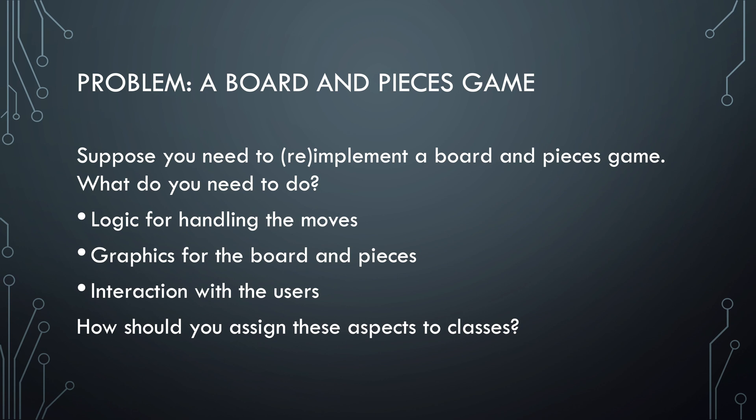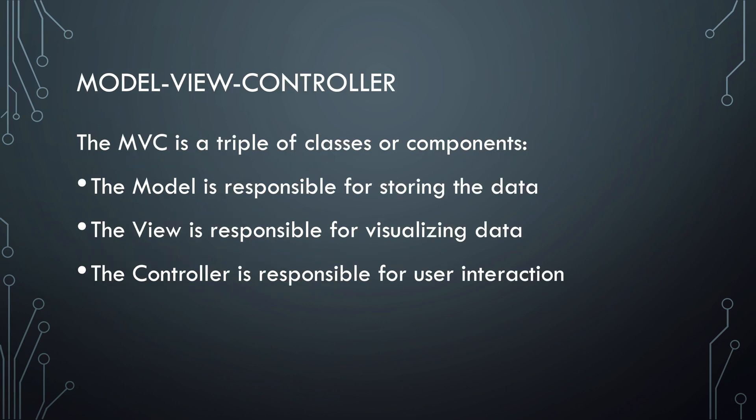How do you assign these aspects to classes? Model view controller is a triple of components. The model is responsible for manipulating and storing the data. The view is responsible for visualizing the data. And the controller is responsible for handling the user interaction.